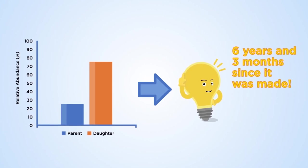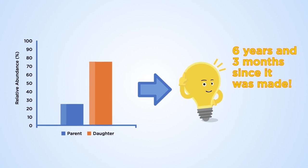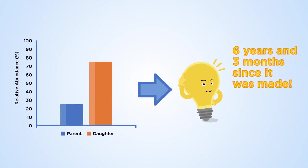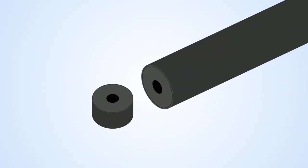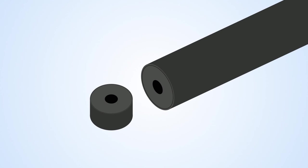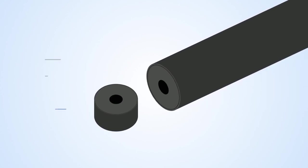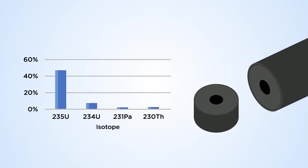Depending on what type of nuclear material a sample is made from, many different age-dating clocks can be applied. For instance, if a sample is made from primarily uranium, scientists look at how much uranium has decayed to form its various daughter isotopes, such as thorium, protactinium, radium, etc.